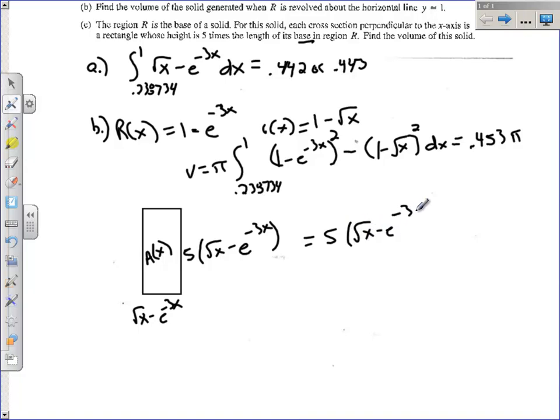So the area of this one cross section is length times width. So we get five times square root of x minus e to the negative 3x squared. That's what our area of our rectangle is. And so what we're going to do is we're just going to integrate that through the x values, 0.238734 all the way up to one. And so here's my setup. Integral 0.238734 all the way up to one of the area of one cross section. I'm not spinning anything around any axis. It's just sitting there. So I don't need a pi or anything like that. dx.